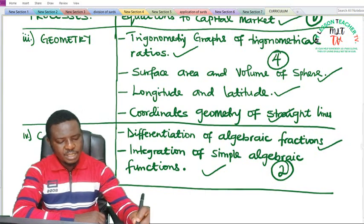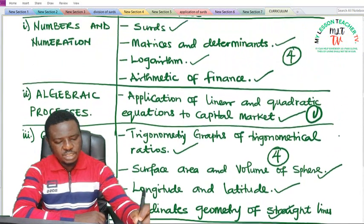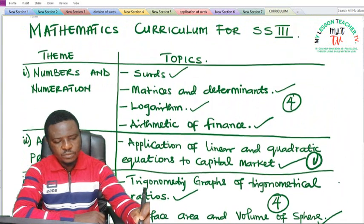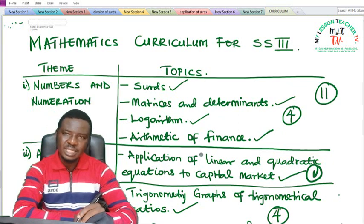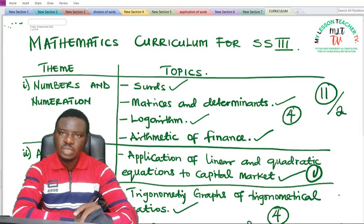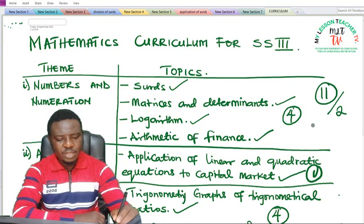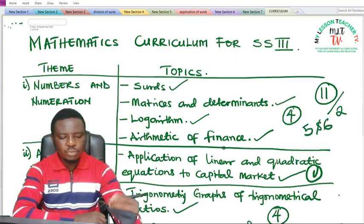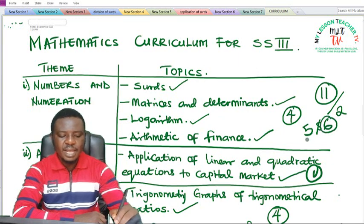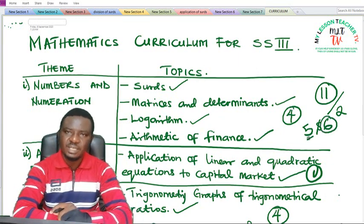So we have approximately 11 topics to be treated in SS3, and this must be done within 2 terms. If you divide this by 2 it means you are going to be treating about 5 to 6 topics in a term. So let's assume we have 6 in first term and then you have to do 5 in second term.